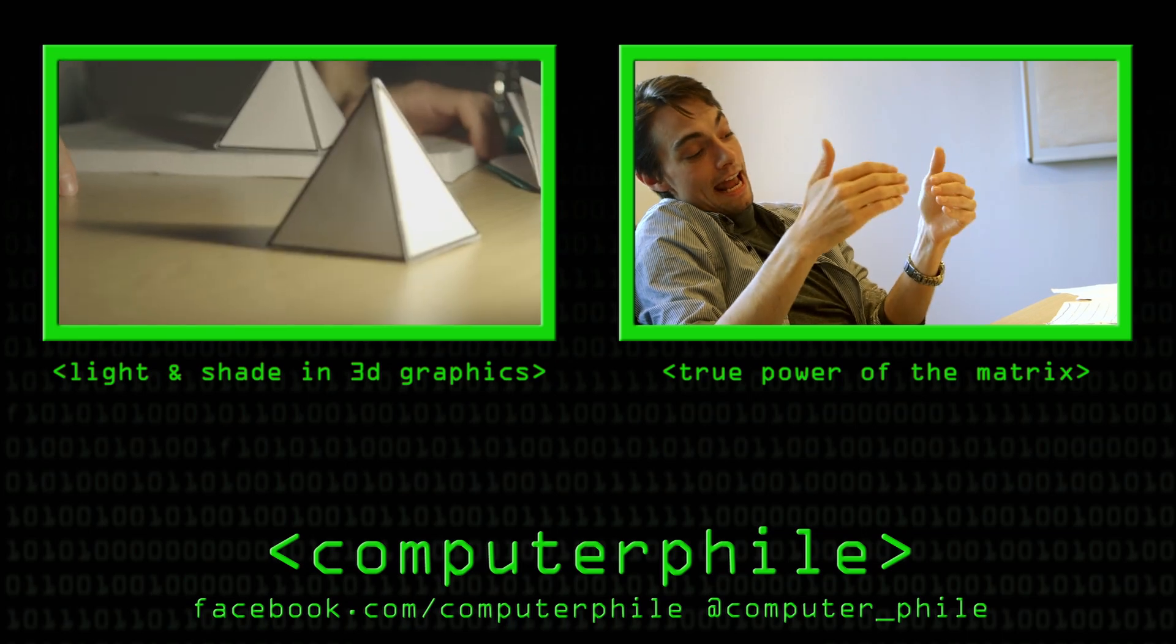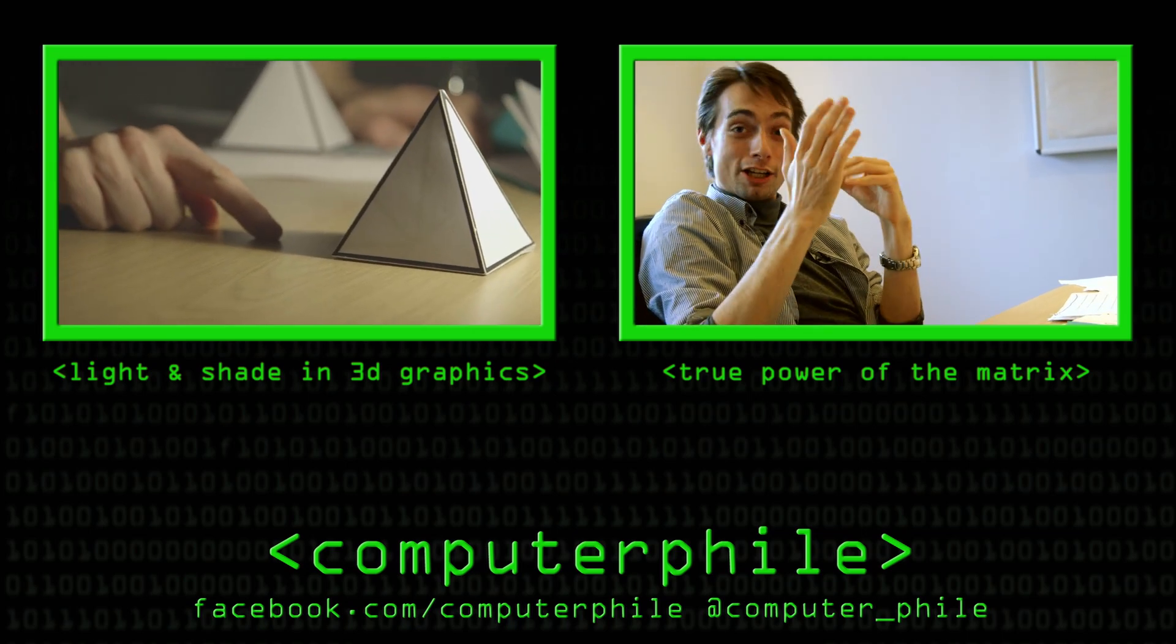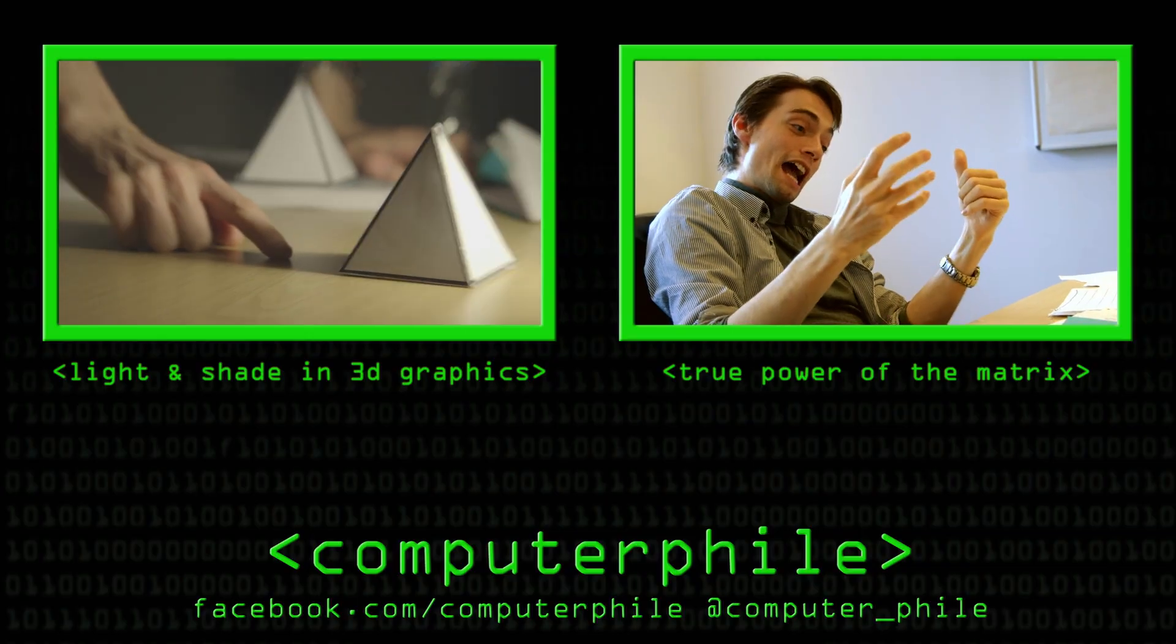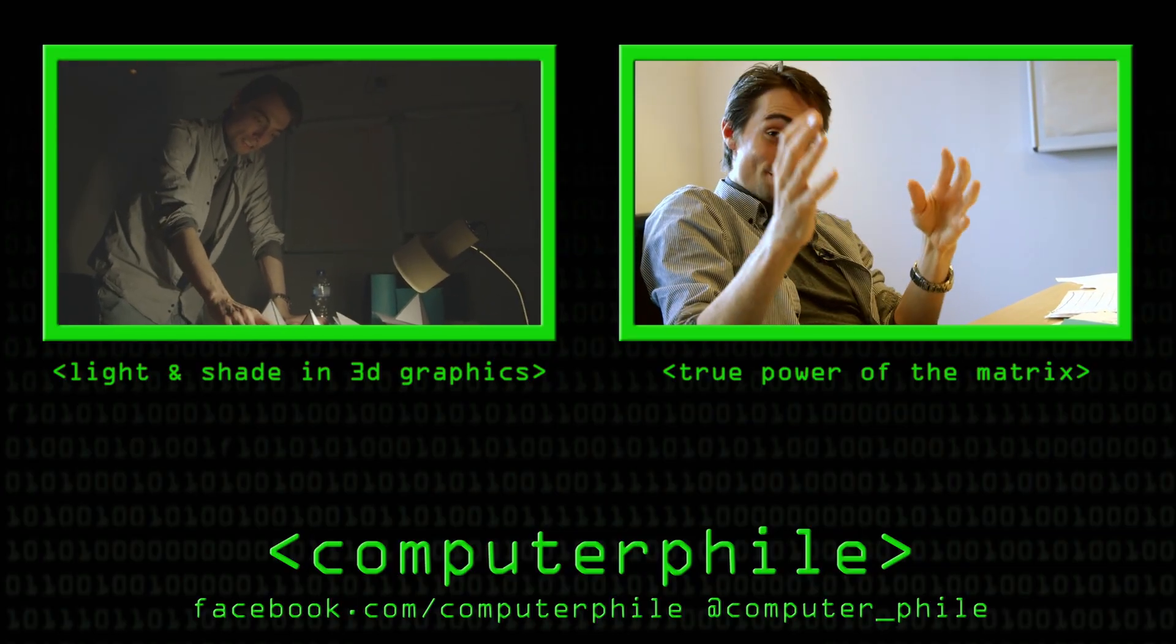We'll incorporate the table into this because this is where the shadow is being cast. The table is another 3D object in our 3D world and we're doing a shear operation in four-dimensional space.